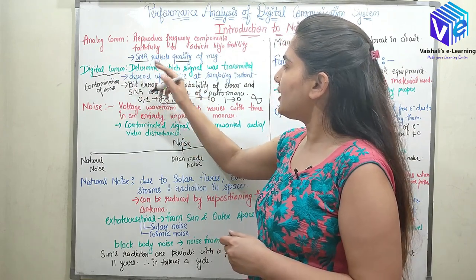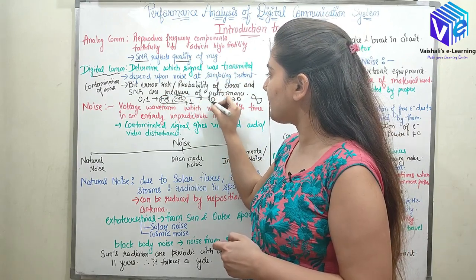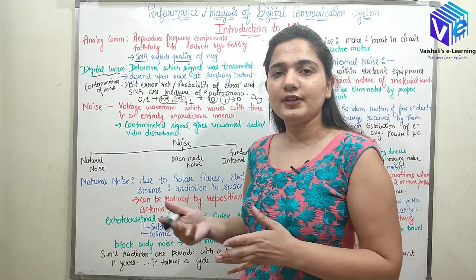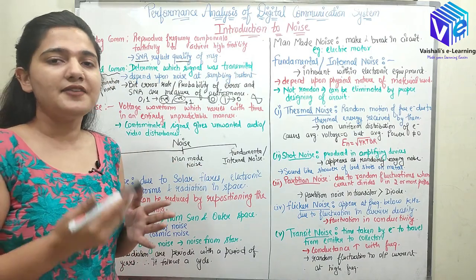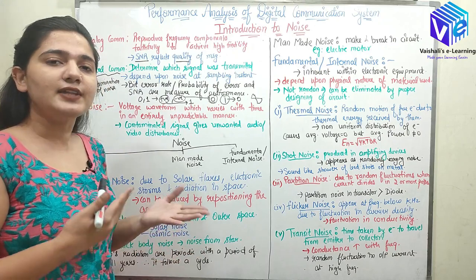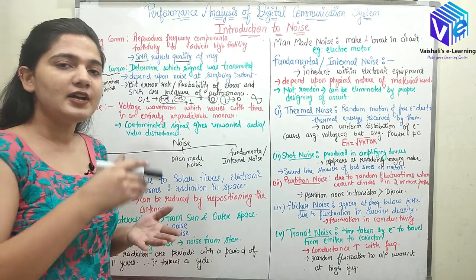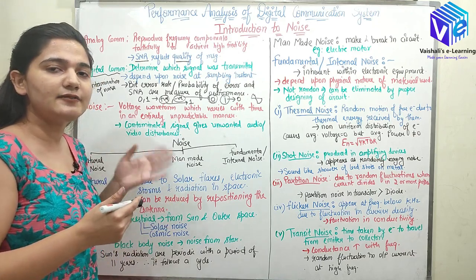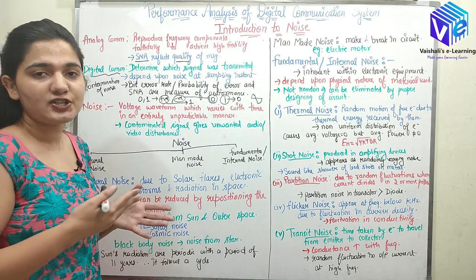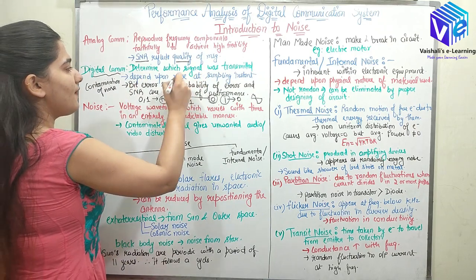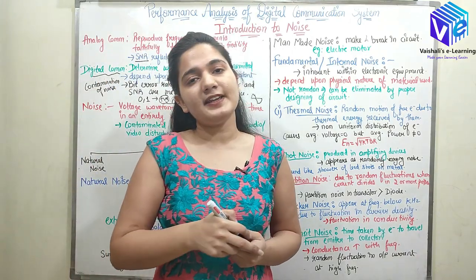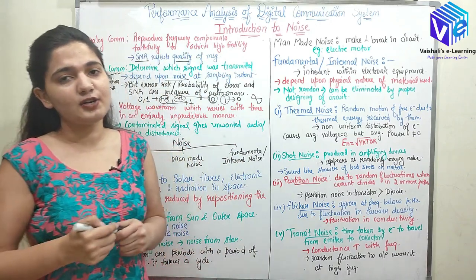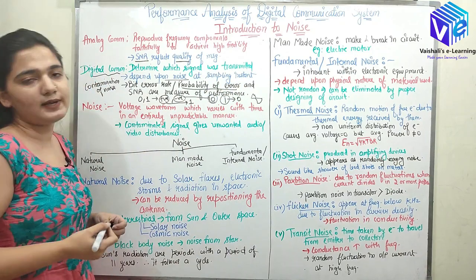In digital communication, noise determines which signal was transmitted — 0 or 1. Whenever there is a hindrance and 0 is received instead of 1 or vice versa, there would be degradation in the quality of the output message, whether in the form of audio or picture. If noise converts 1 to 0 or 0 to 1, the picture quality would also be degraded. So performance depends on SNR as well as the bit error rate, or probability of error.